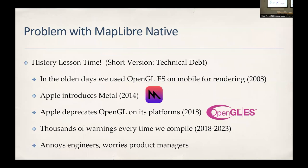MapLibre Native has one big problem. In the old days, we used OpenGL ES on both Android and iOS. Then Apple came out with Metal, their own API, and deprecated OpenGL in 2018. What that means practically is that whenever you compile something using OpenGL you get thousands of warnings. More concerning for a product manager: if you're running an OpenGL-based service bringing in tens of millions of dollars, you don't know if Apple will pull support on new hardware. It's a huge piece of technical debt.